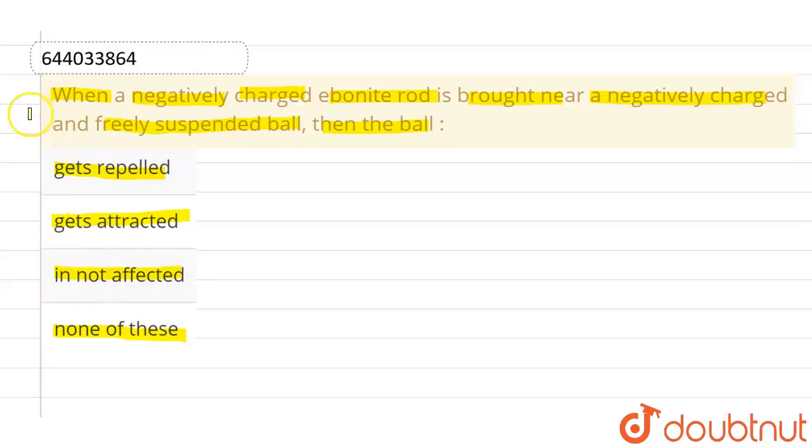So what we are given is that the ebonite rod is negatively charged. Let us assume that this is the ebonite rod, and it is negatively charged. Let this be the negative charge which is distributed over it, and it is brought near a negatively charged